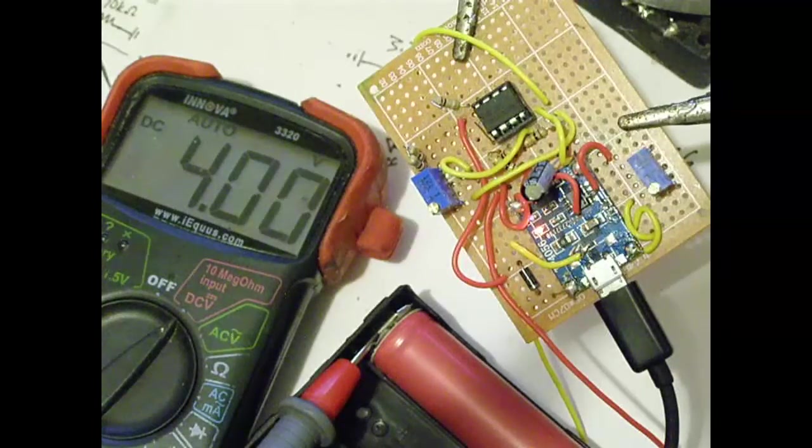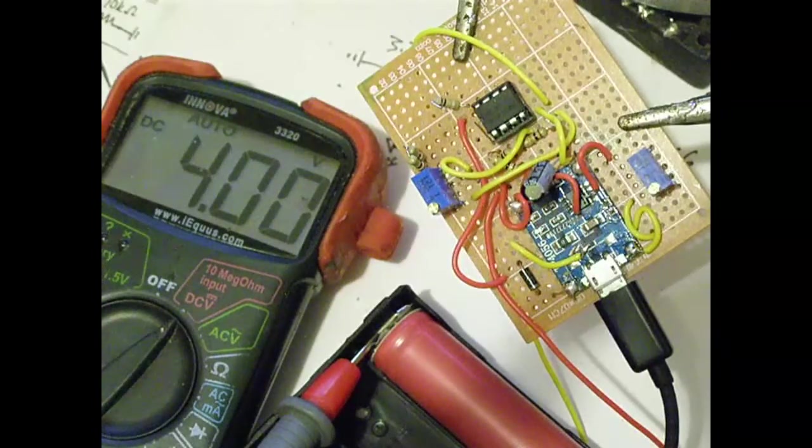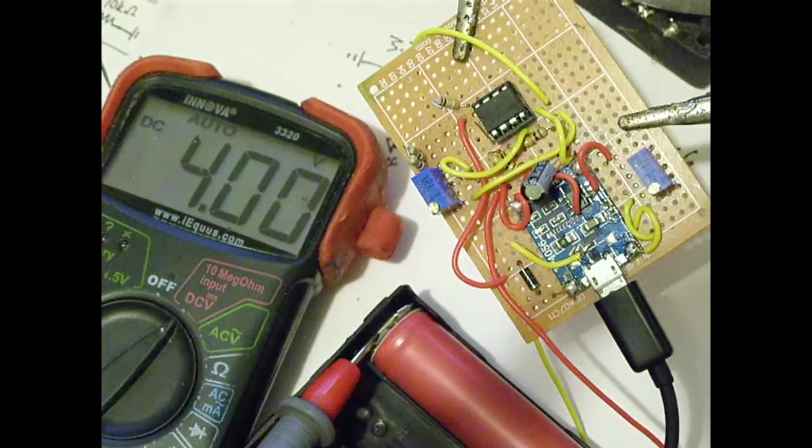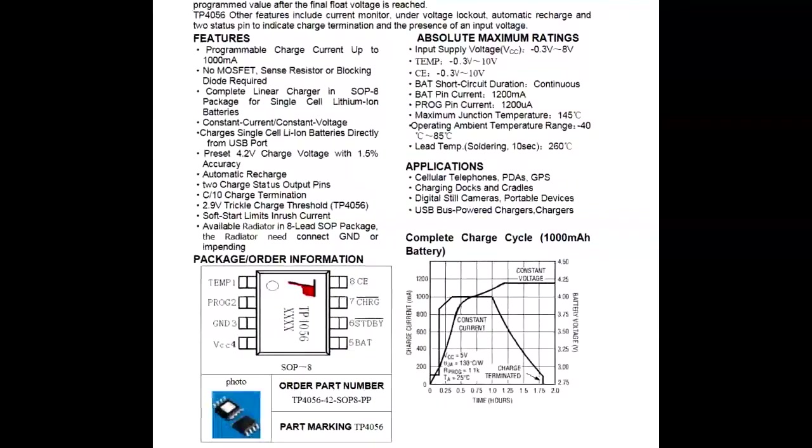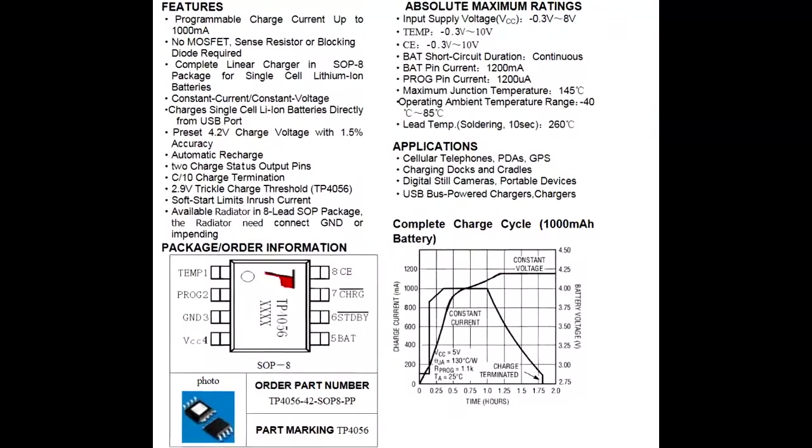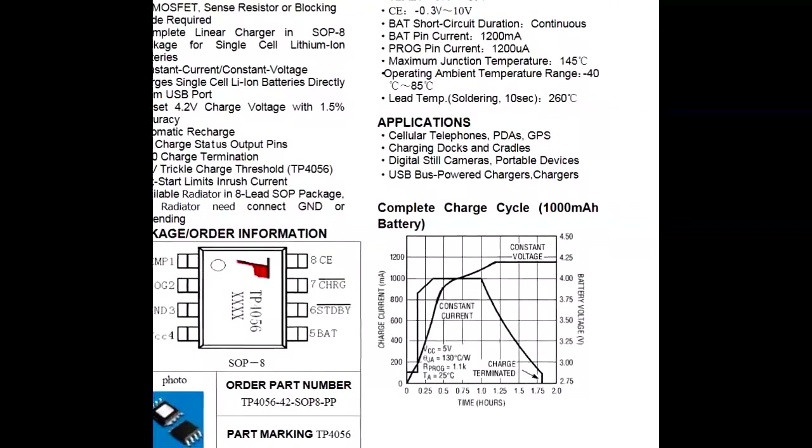For future use, I will set the voltage reference so that it will shut off at approximately 4.15 volts. Typically, the TP4056 shuts off at around 4.2 volts.